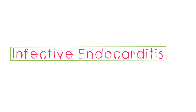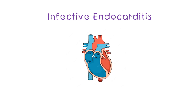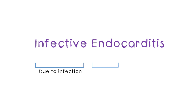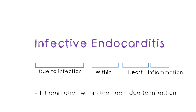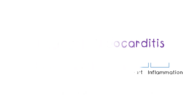Infective endocarditis is a common adult as well as pediatric condition and can have a lot of devastating sequelae, therefore should be known thoroughly. Infective endocarditis simply put is an infection inside the heart that causes inflammation. Usually this causes infection of the valves and vegetations to develop on top of the valves — in simple terms, a ball of bacteria that develops on top of the valves.